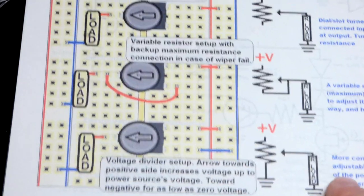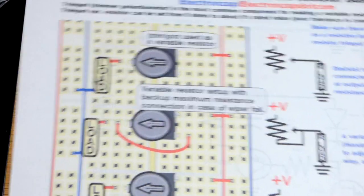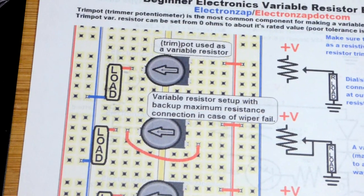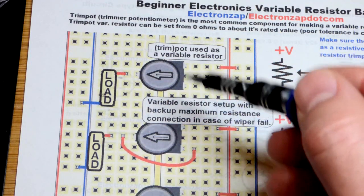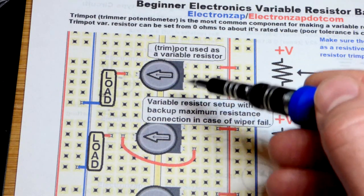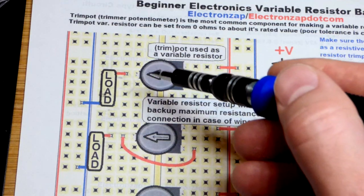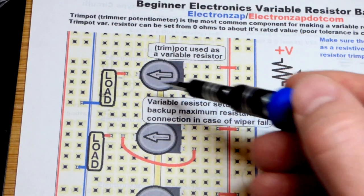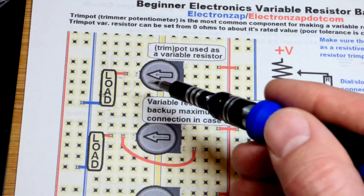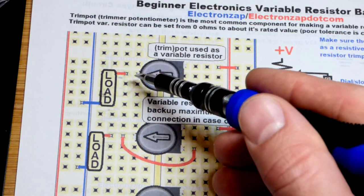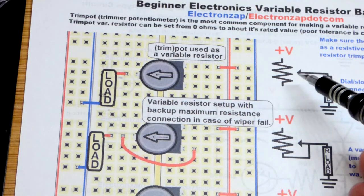So we'll come back to that, but in any case you can see this is what the trim pots I used to use look like. They had three rather large pins and the two on one side had a resistive element that ran across underneath. Then there's a dial with a wiper that slides across and it connects electrically to a pin. You can put a load there.